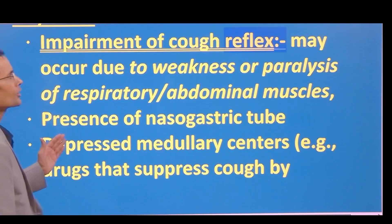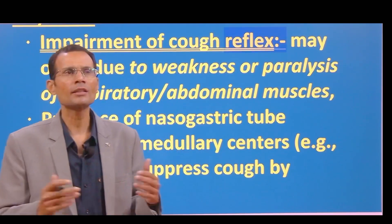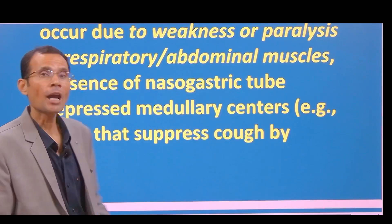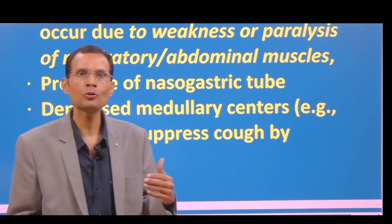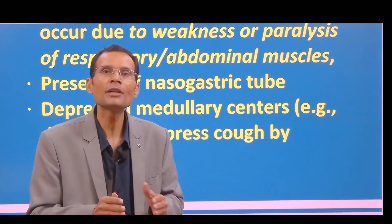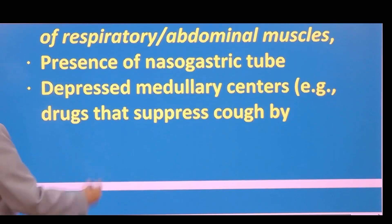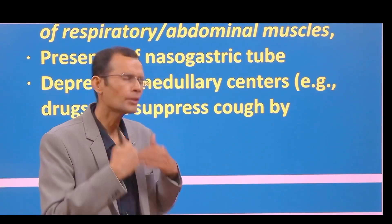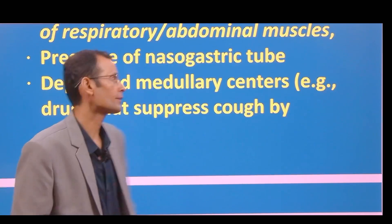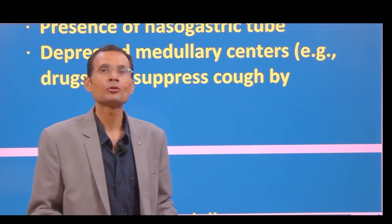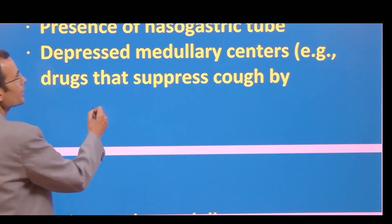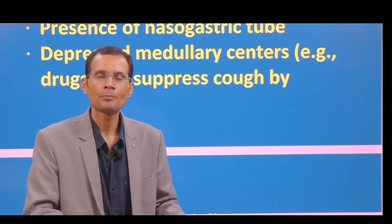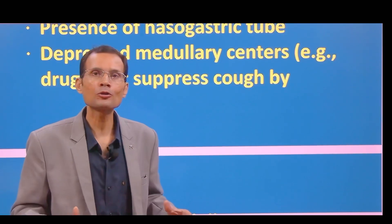The cough reflex may be impaired in certain conditions — for example, weakness or paralysis of the respiratory muscles due to cervical spine injury. If the cough reflex is impaired and the patient is also unconscious, secretions will accumulate in the respiratory passage. Additionally, the presence of a nasogastric tube in the ICU may also impair the cough reflex, so those secretions will have to be sucked out. Depressed medullary centers can also inhibit the cough reflex.